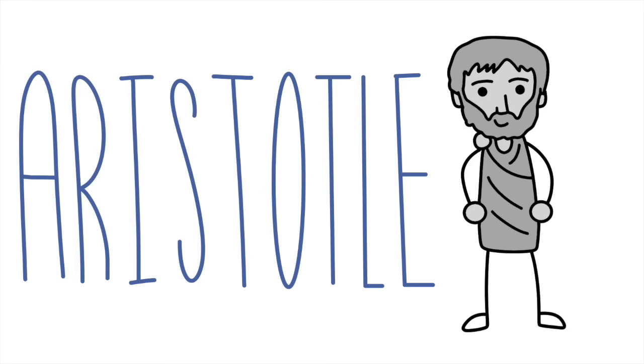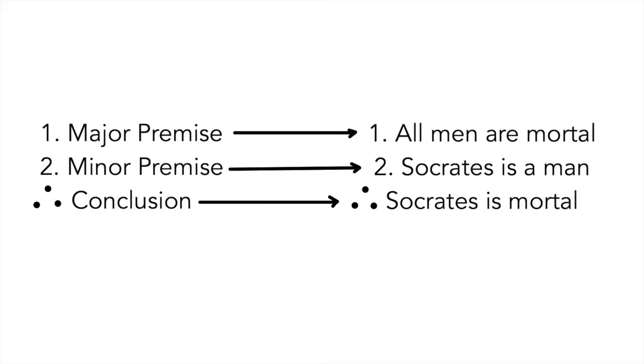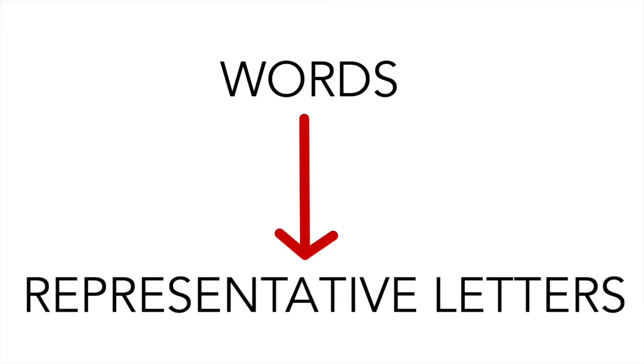Shout out to Aristotle. It's surprising that we haven't talked about him yet on this channel, but he is the inventor of syllogistic logic. Now, there are three parts to an argument in syllogistic logic, or syllogisms for short. There's the major premise, such as all men are mortal. There's the minor premise, such as Socrates is a man. Then there's the conclusion, such as Socrates is mortal. Pretty straightforward.